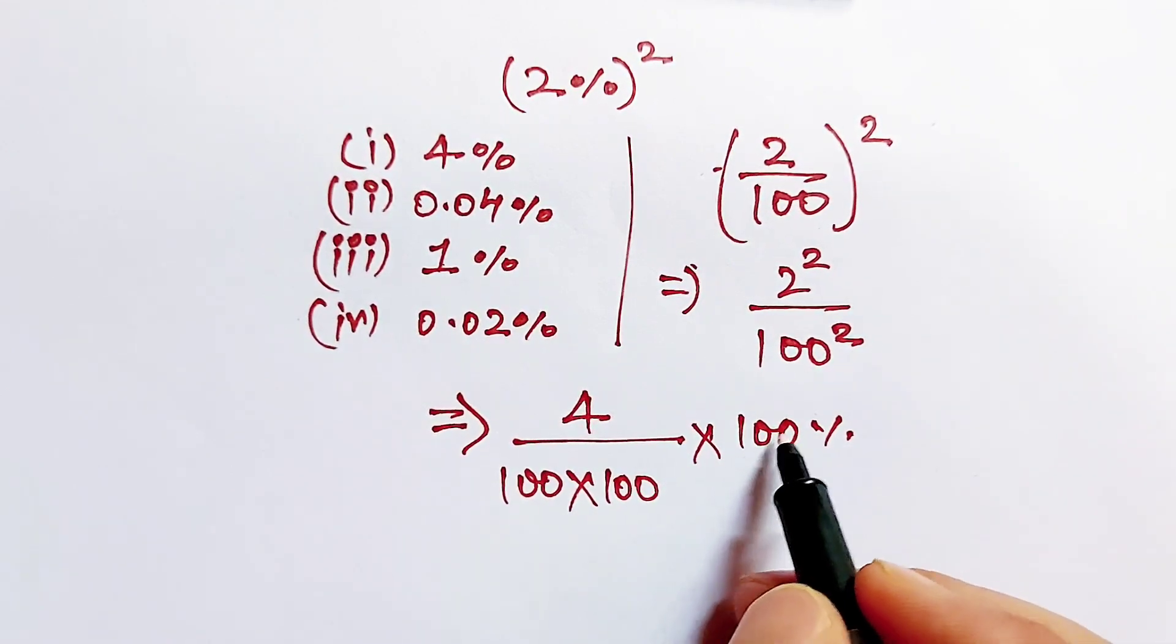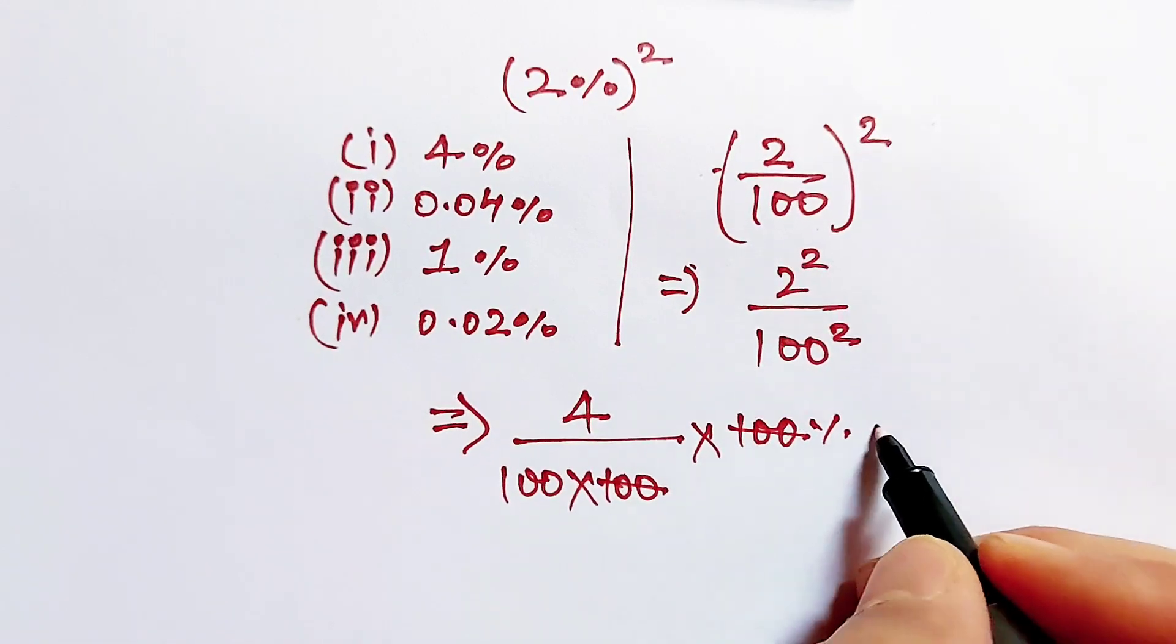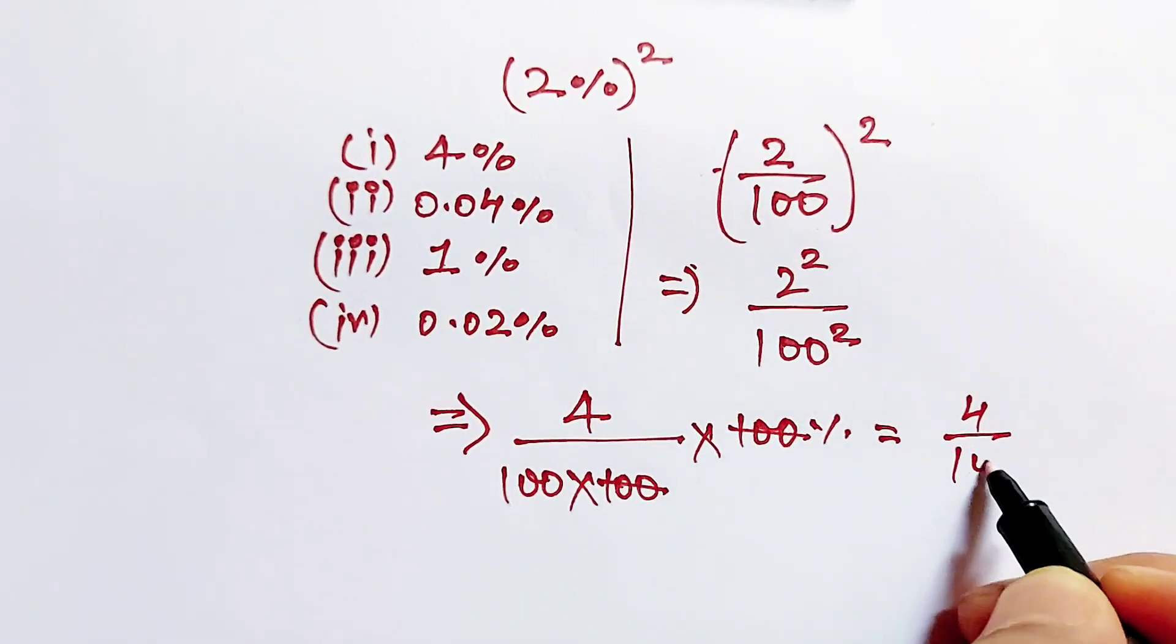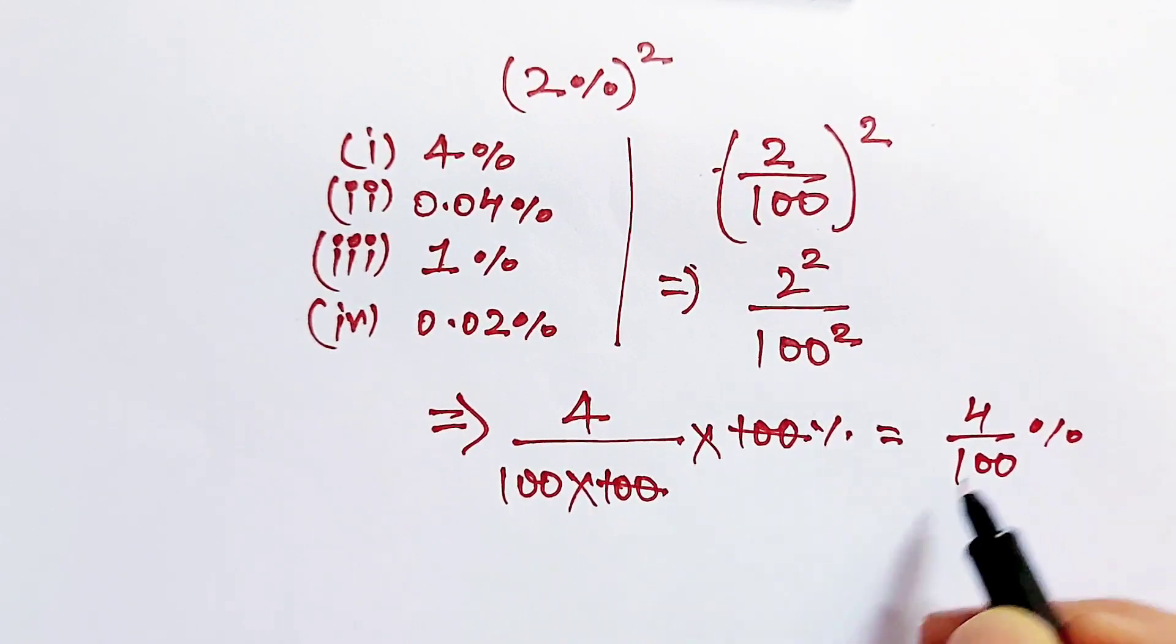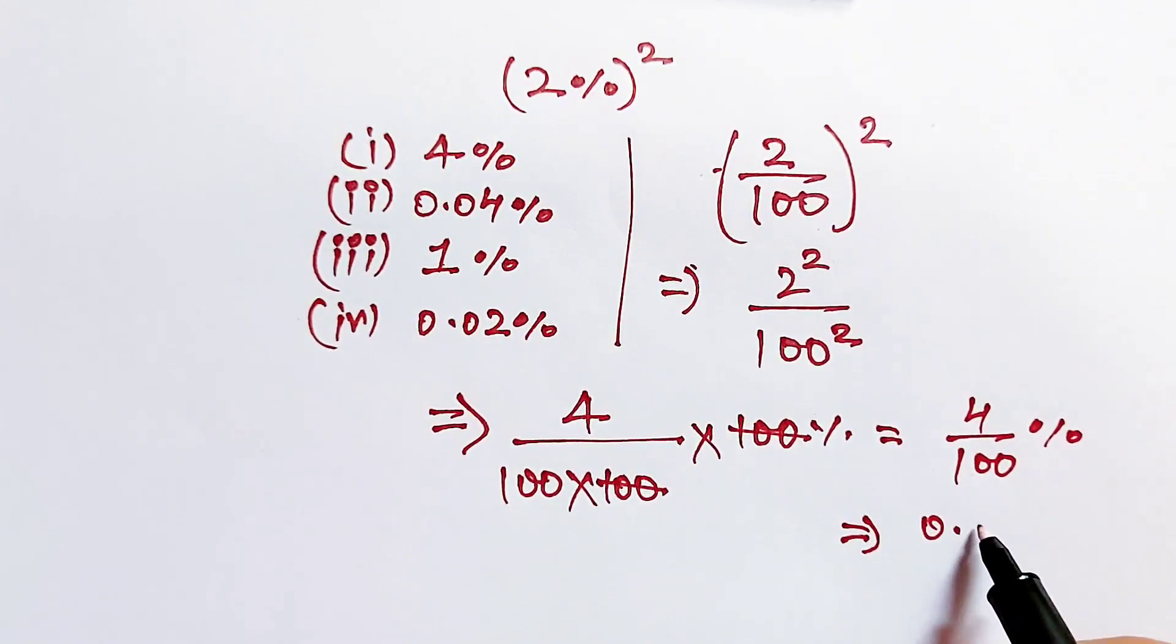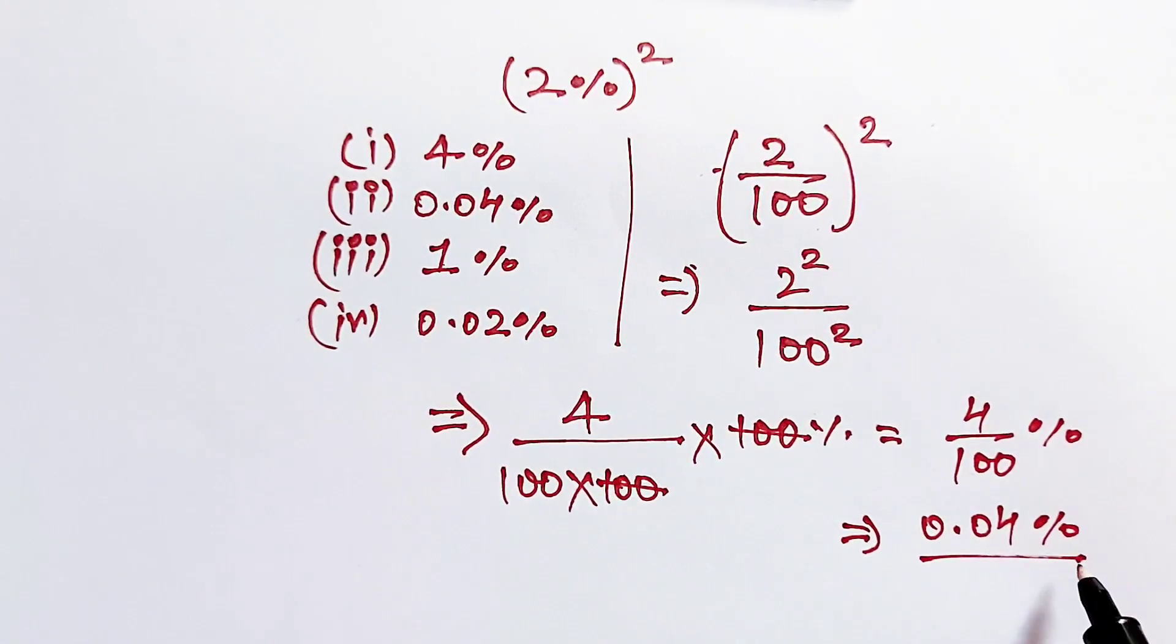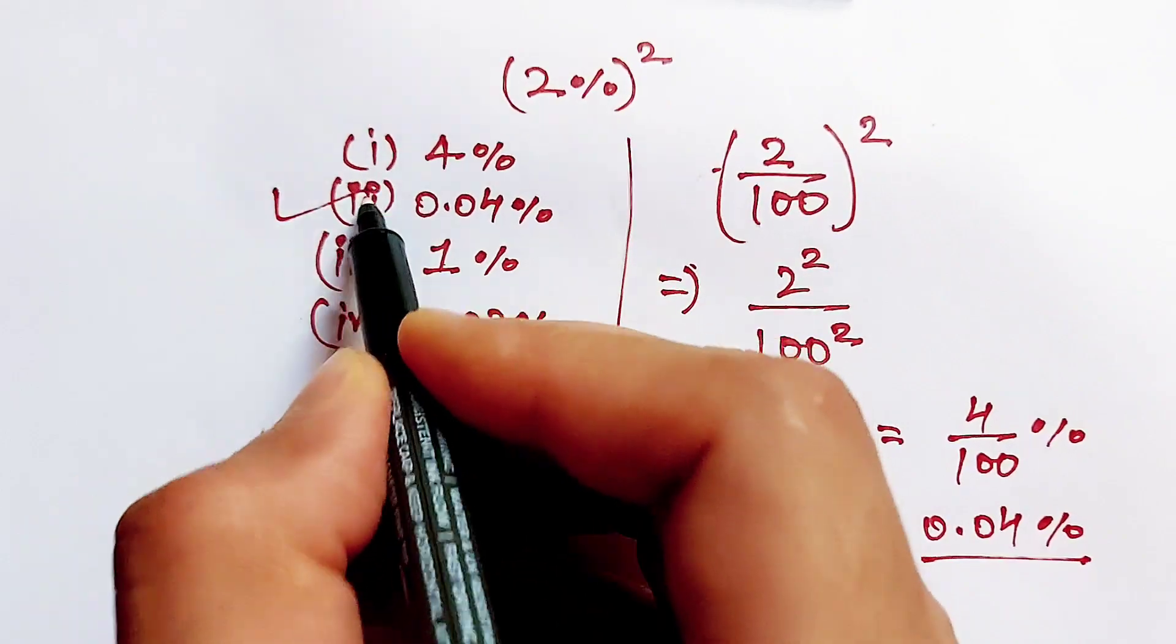Now, this 100 will cancel out this 100 and this is equal to 4 over 100 percentage, and this is same as 0.04 percentage. Our answer is option 2.